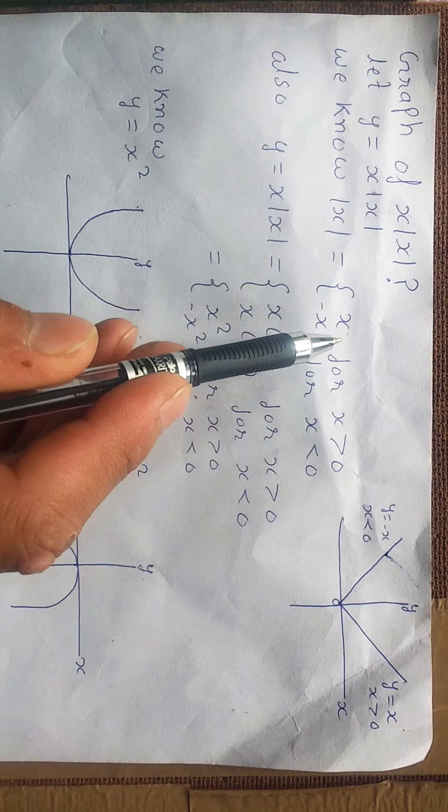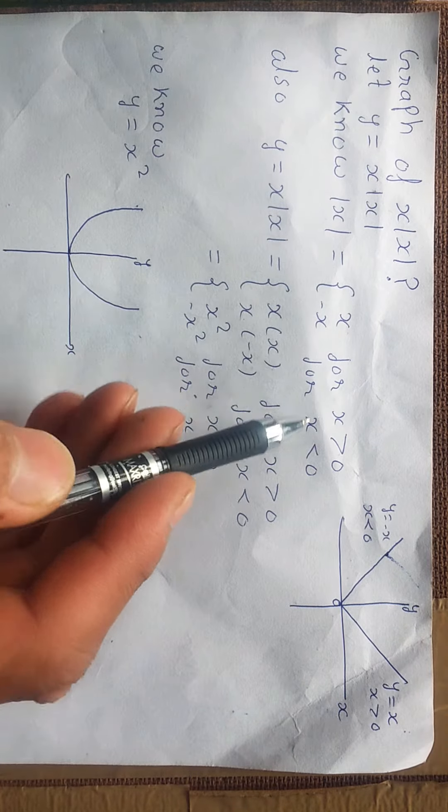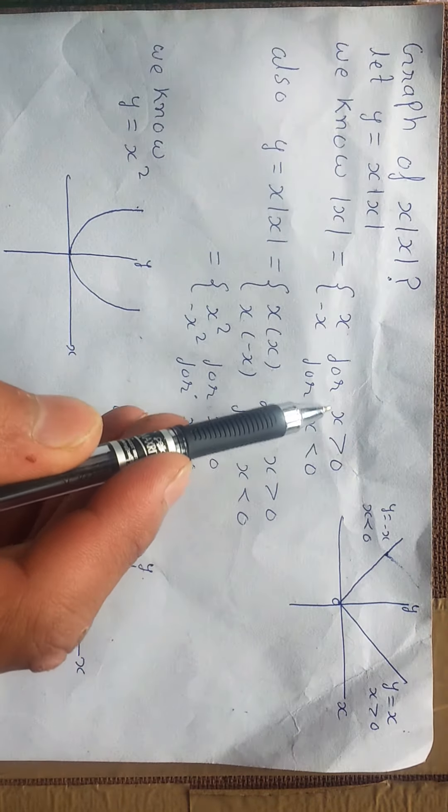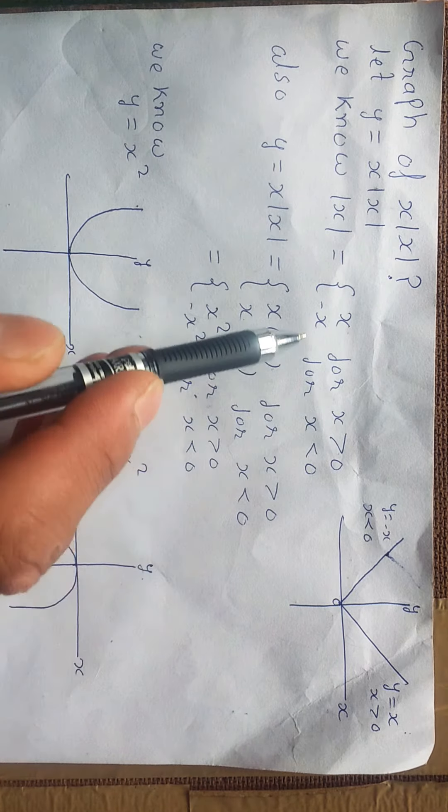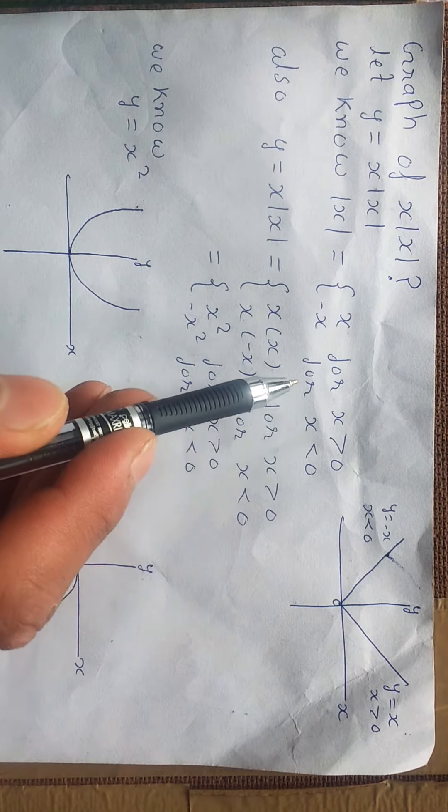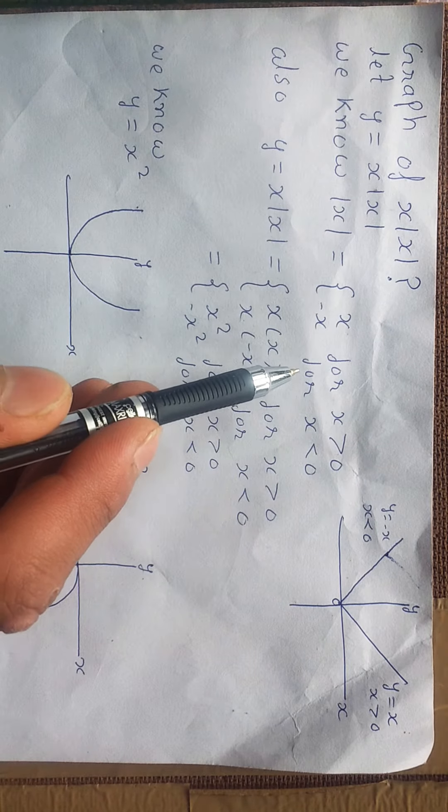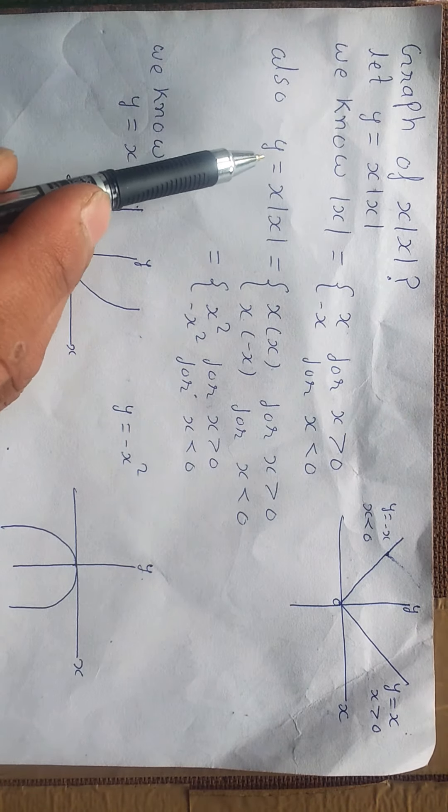For x greater than 0, the mod value will open in positive value, and for x less than 0, the mod value will open in negative value. Also, we have y equal to x|x|.